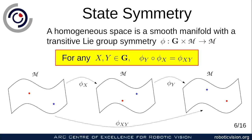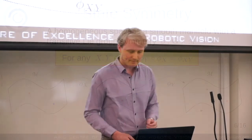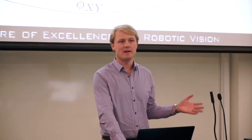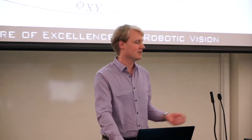What does it mean for a space to be homogeneous? For a space to be homogeneous means that there exists a Lie group, which we'll label bold G, and a transitive action of that Lie group on the manifold. What it means for a function phi to be an action is that if I take two elements in the group, x and y, then first applying phi with x and then applying phi with y is equivalent to taking the product x·y and applying our action phi with that product.